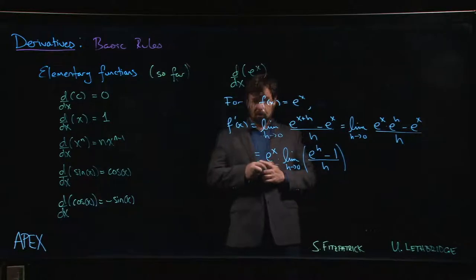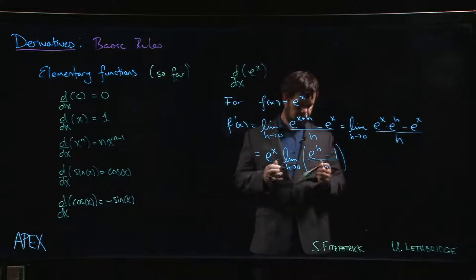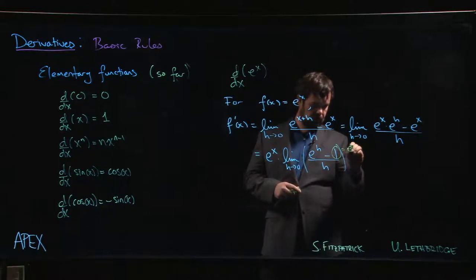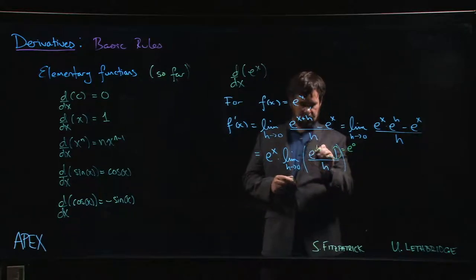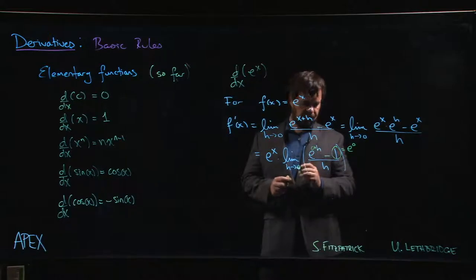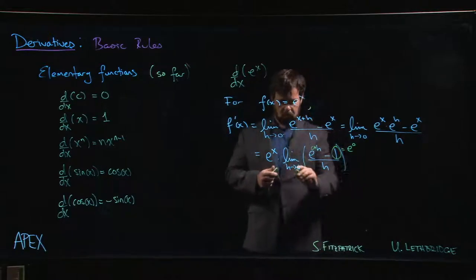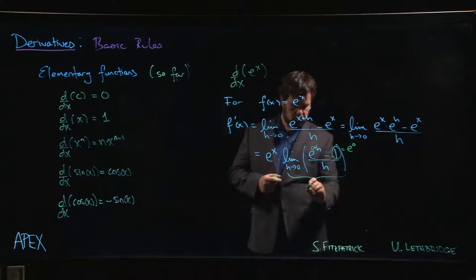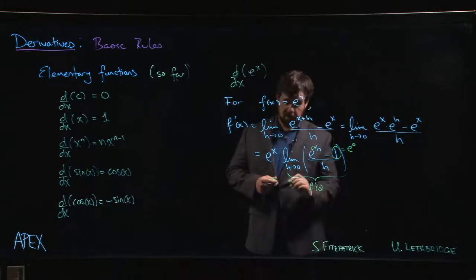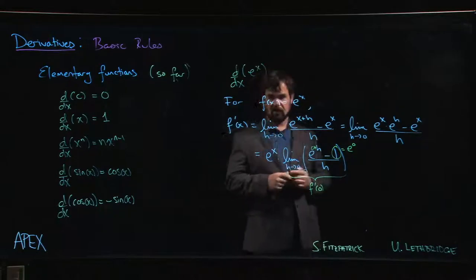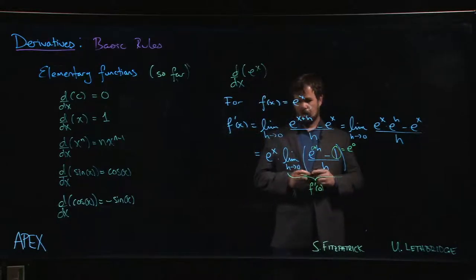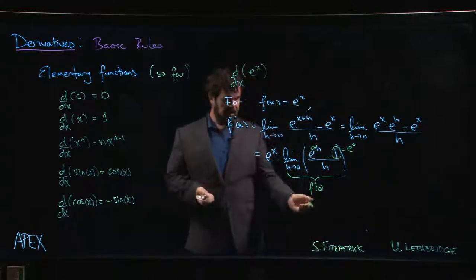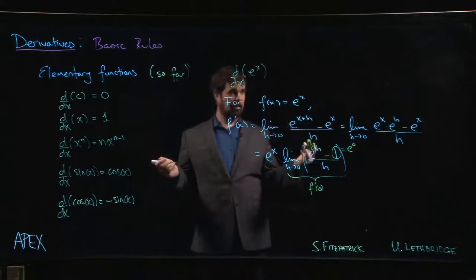Now, it might also be useful to remember that 1 is equal to e to the 0. And h, of course, is 0 plus h. So what you're left with here is the value of the derivative at 0. It's f prime of 0. So somehow, once you know f prime of 0, you just multiply by e to the x, and then you have f prime of x at every other x value.